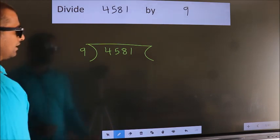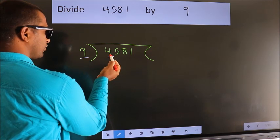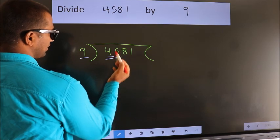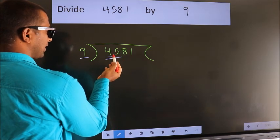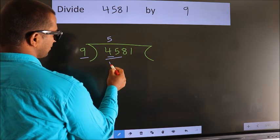Next. Here we have 4. Here 9. 4 smaller than 9. So we should take 2 numbers, 45. When do we get 45? In 9 table. 9 fives, 45.